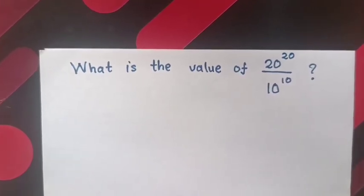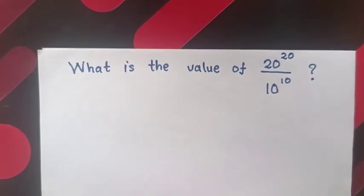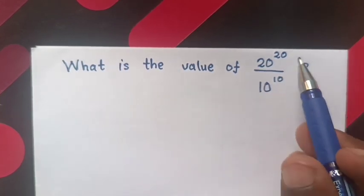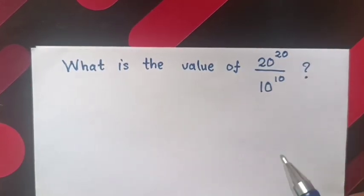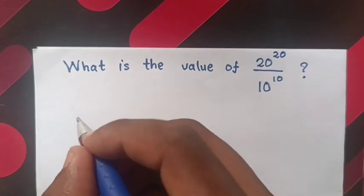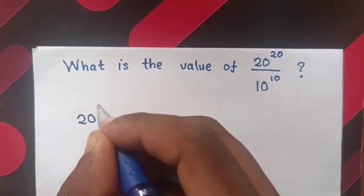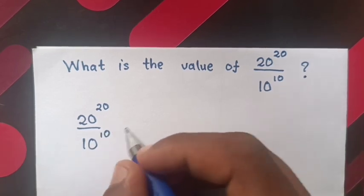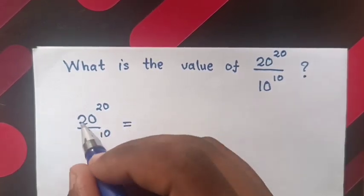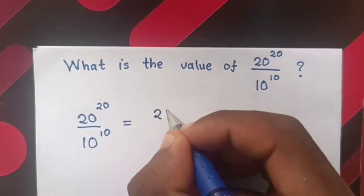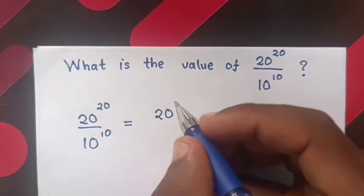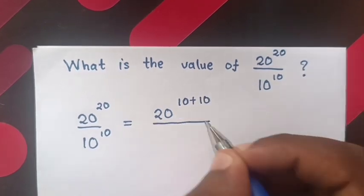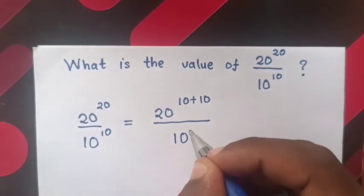Hello. How to solve this power division problem, which is asking: what is the value of 20 power 20 over 10 power 10? So, 20 power 20 over 10 power 10 is equal to this — we write 20 power 20 as 10 plus 10, over 10 power 10.